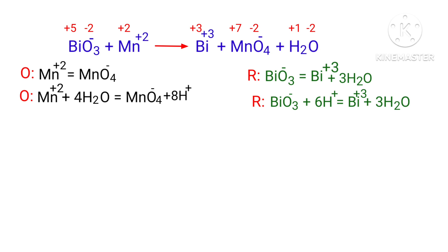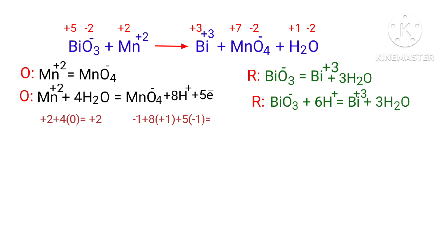For a redox reaction, the sum of charges must be equal on both sides. In the oxidation half-reaction, both sides are not equal. To make them equal, you should add electrons — you cannot add protons. Adding 5 protons to the left side to reach +7 is wrong. Instead, add 5 electrons to the right side to make it equal to +2.